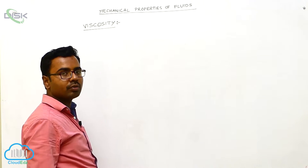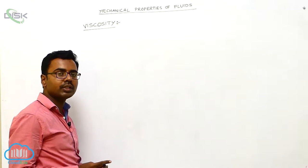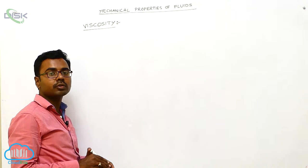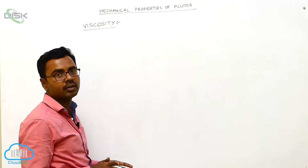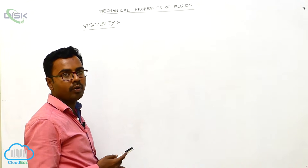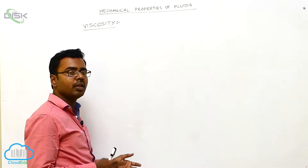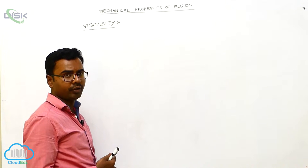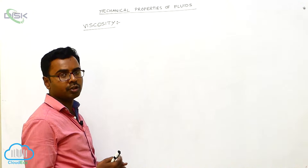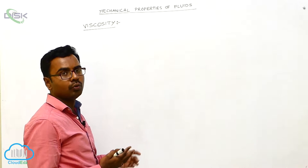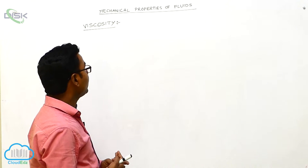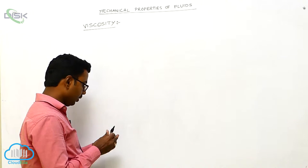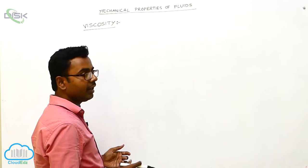Viscosity is the fluid friction. It is similar to the frictional force that acts between two solid surfaces. Between two solid surfaces, friction force opposes the relative motion between them. In the same way, fluid friction opposes the relative motion between two fluid layers.